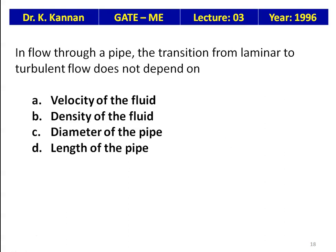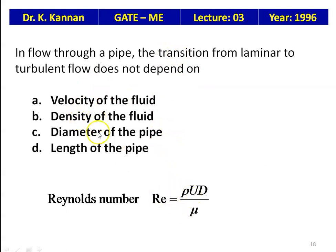In flow through a pipe, the transition from laminar to turbulent does not depend on — velocity of the fluid, density of the fluid, diameter of the pipe, or length of the pipe? The Reynolds number Re = ρud/μ depends on density, velocity, and diameter. Therefore, the transition does not depend on the length of the pipe.